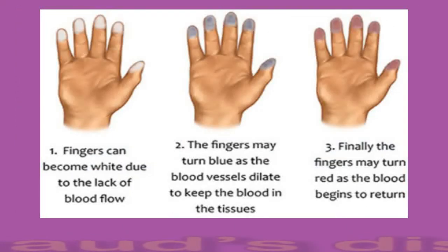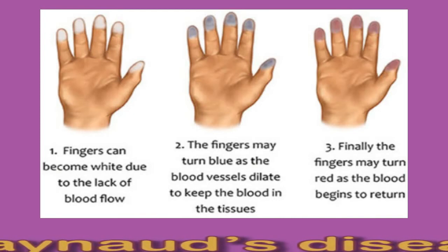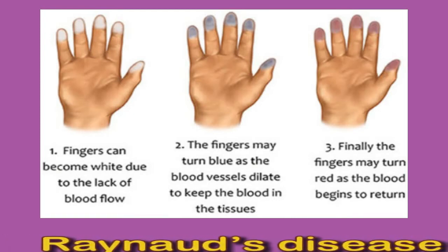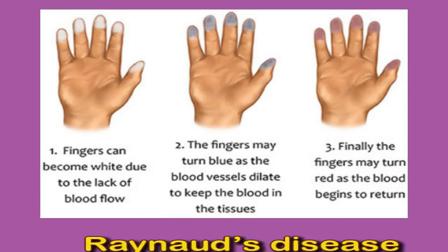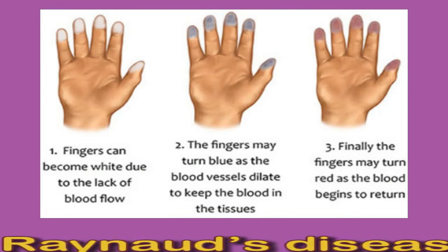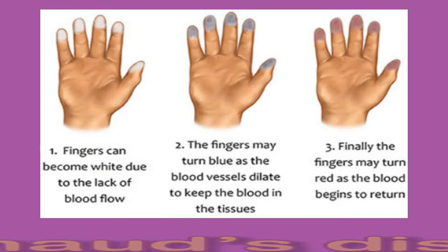Raynaud's disease is a rare condition that causes episodes of narrowed blood vessels. Symptoms sometimes occur in response to cold temperatures or stress and include body parts turning pale or blue, including the fingers and toes, numbness or tingling, pain, and a burning sensation. Episodes of narrowed blood vessels can last minutes or hours and vary in frequency. Doctors may suggest strategies to alleviate symptoms such as practicing stress management and avoiding the cold. If symptoms are severe, a doctor may recommend medication or surgery.